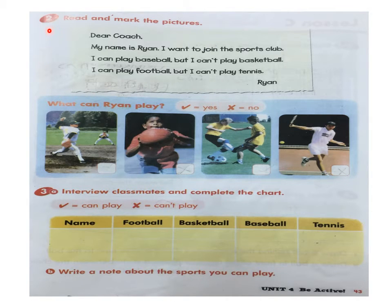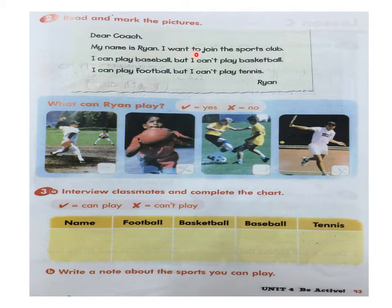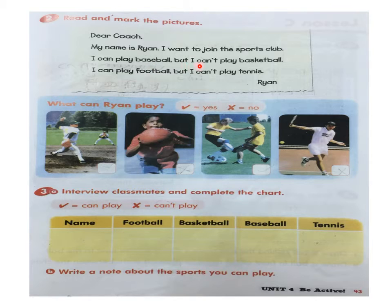Let's answer exercise 2: read and mark the pictures. Ryan wrote this letter to the coach in the club. 'My name is Ryan. I want to join the sports club. I can play baseball, but I can't play basketball. I can play football, but I can't play tennis. Ryan.'